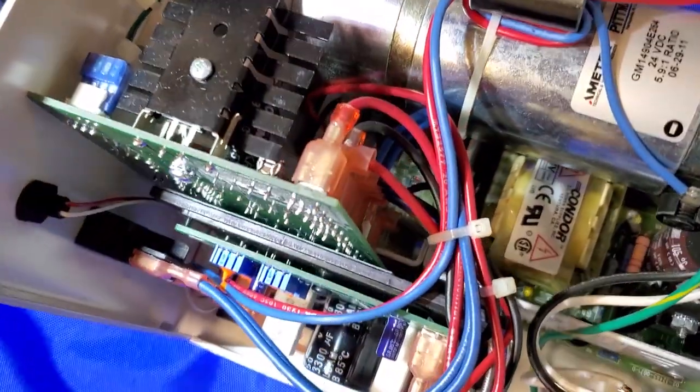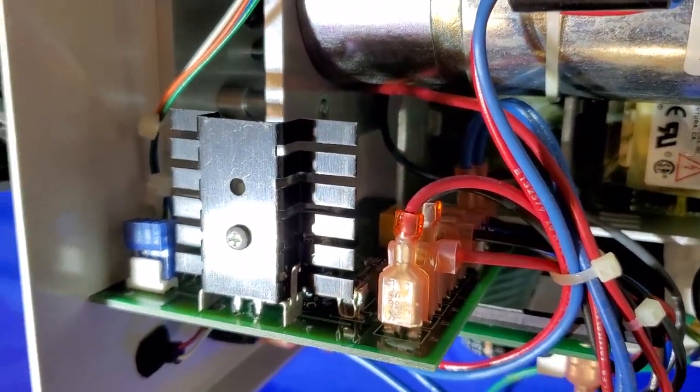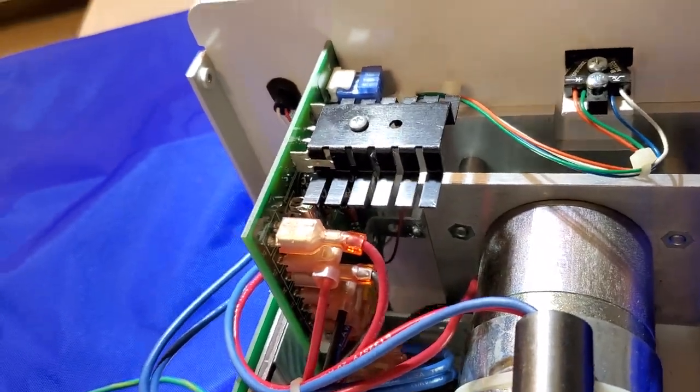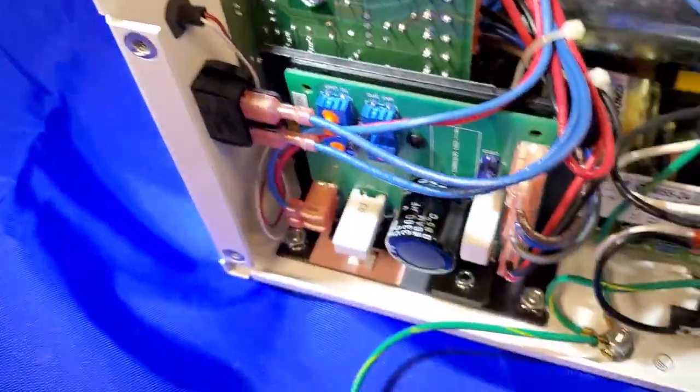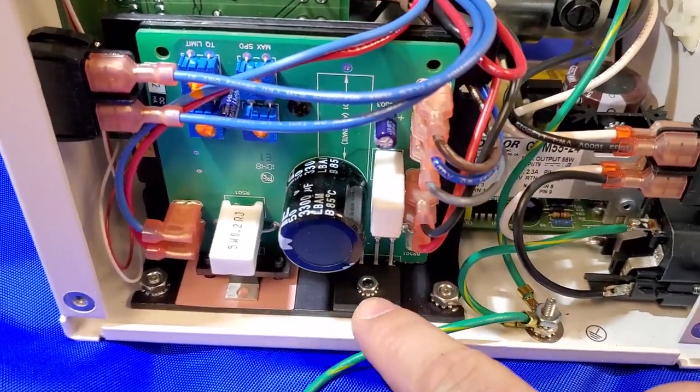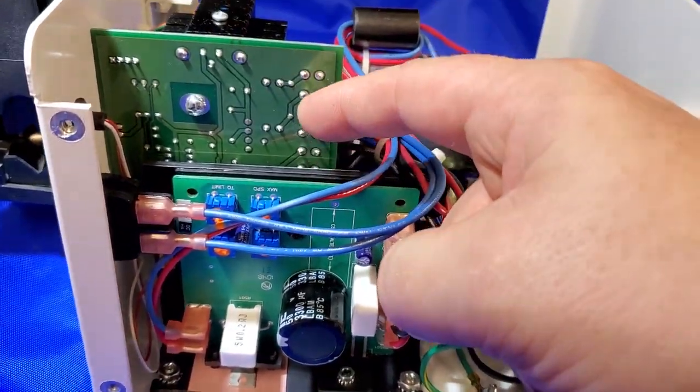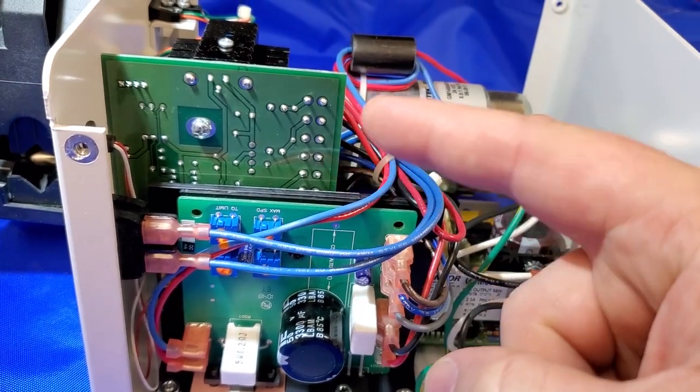And this card will turn on and off with the controller card, which is that guy right there. So the AC comes in, gets converted to DC. You can see a little bit of it goes back over to your controller card to power it and to control the switching.